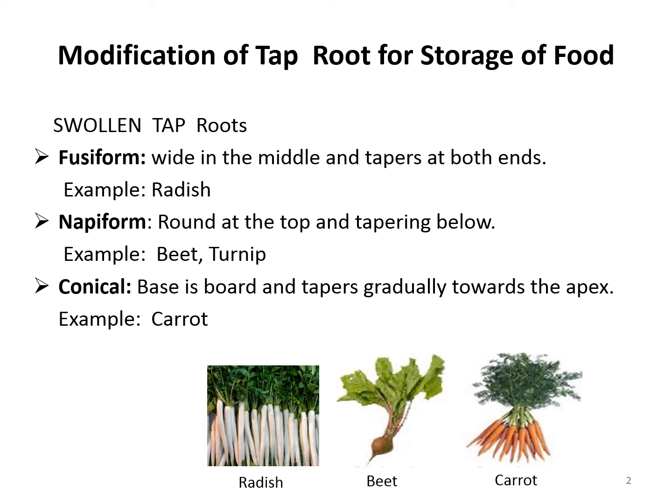Roots in some plants change their shape and structure and become modified to perform functions other than absorption and conduction of water and minerals. They are modified for support, storage of food, respiration, and reproduction. We will now learn about the modification or types of taproot and adventitious root, starting with taproot modifications.